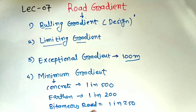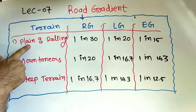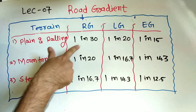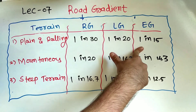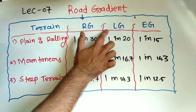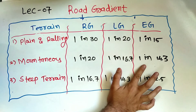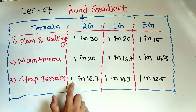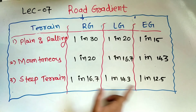So to summarize the IRC minimum gradient values: concrete — 1 in 500, earthen road — 1 in 200, bituminous road — 1 in 250. Also remember this table as per the terrain: for plain and rolling terrain, the ruling gradient is 1 in 30, limiting gradient is 1 in 20, and exceptional gradient is 1 in 50. For mountainous terrain, ruling gradient is 1 in 20, limiting gradient is 1 in 16.7, and exceptional gradient is 1 in 14.3.